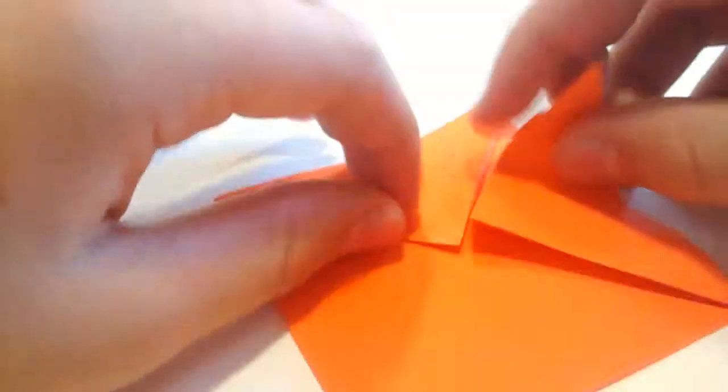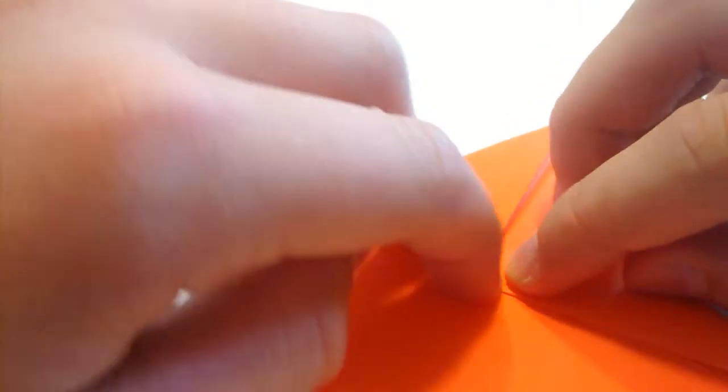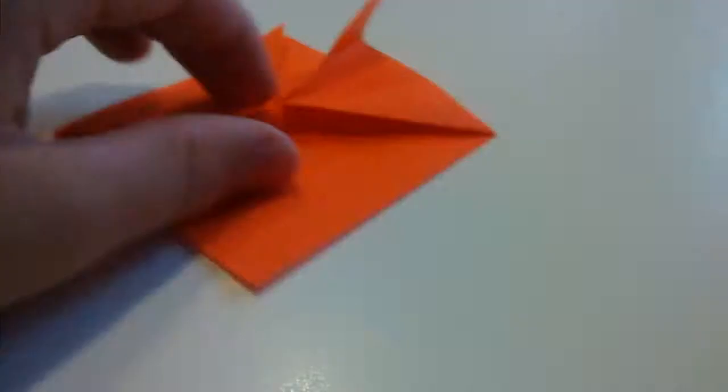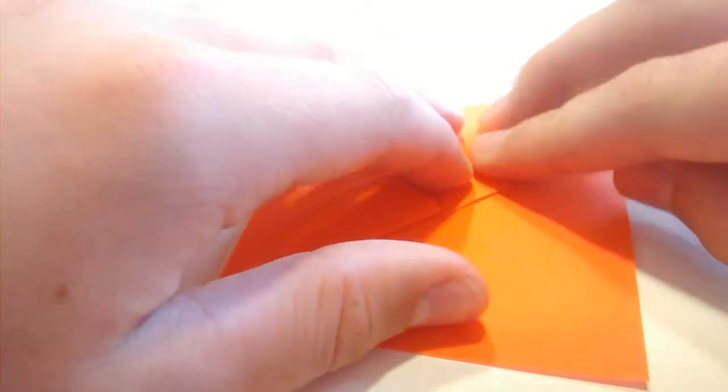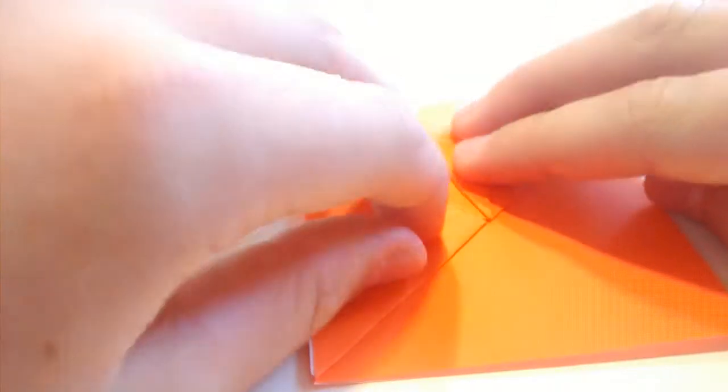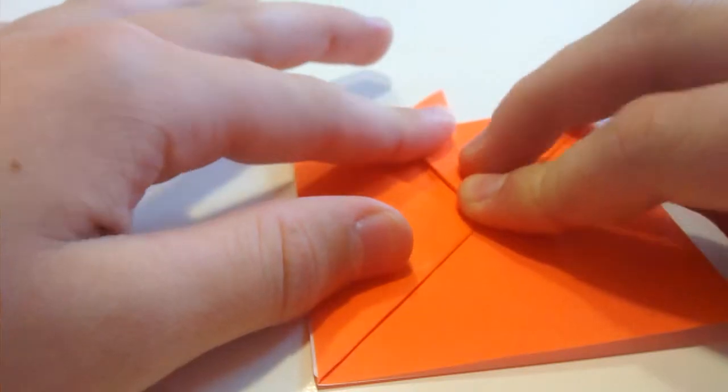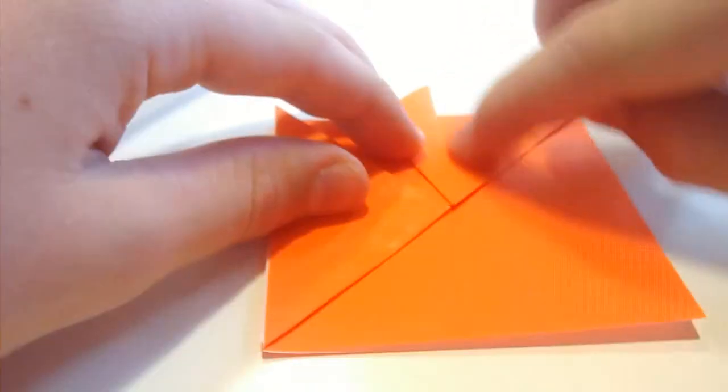Do the same with that side. And we want to open it up and make the ears of the samurai helmet if you like. Or actually they are going to make the ears of the goldfish as well. So just fold them out. It's up to you how much you want to fold them, but I recommend they are straight. Because it looks better if they are straight.